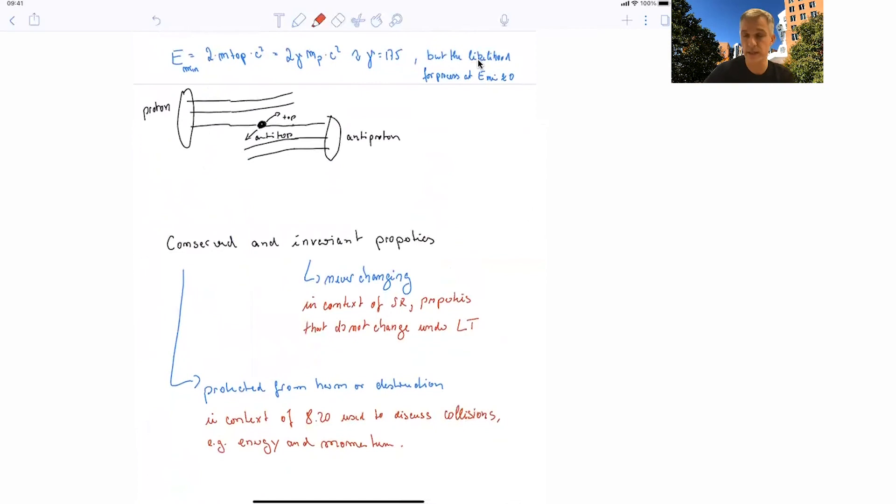One last point, which leads sometimes to confusion, is the concept of conserved and invariant properties. When we look at the meaning of the word, invariant means never changing. And in the concept of special relativity, properties are invariant and they do not change under Lorentz transformation or Galilean transformation as we discussed earlier in the class.